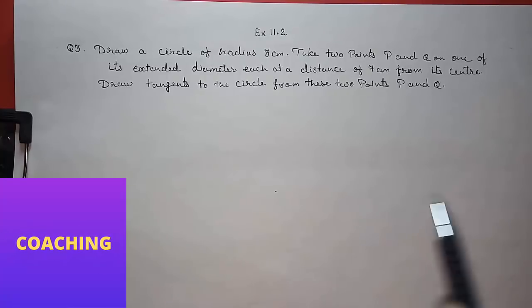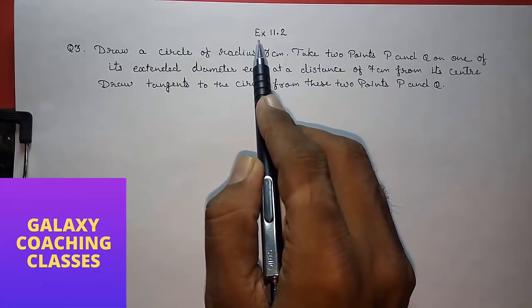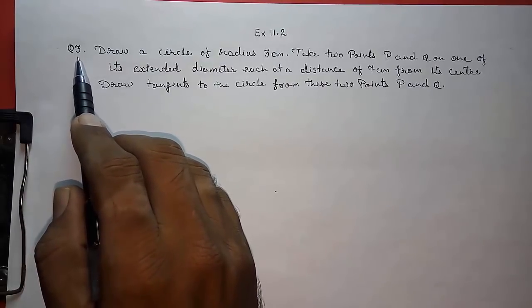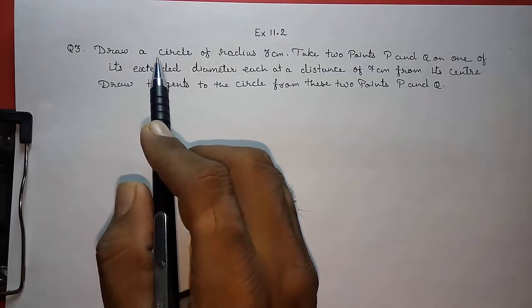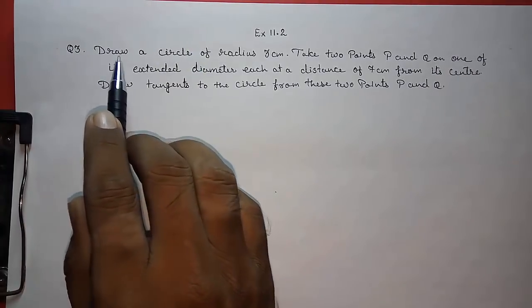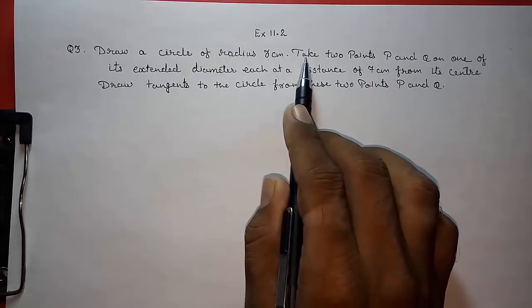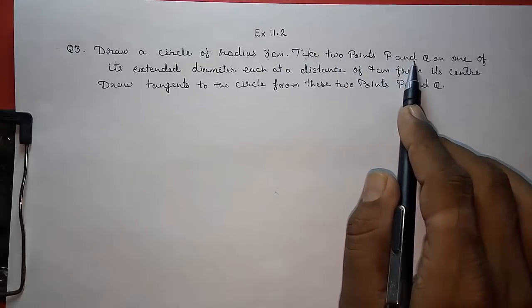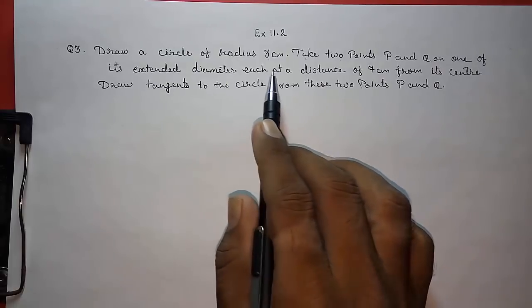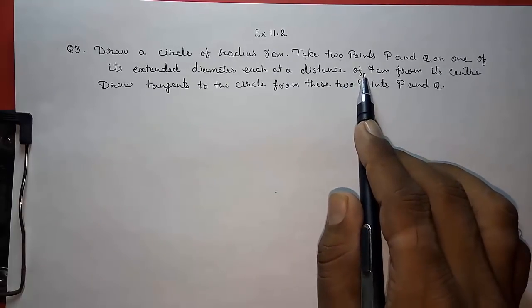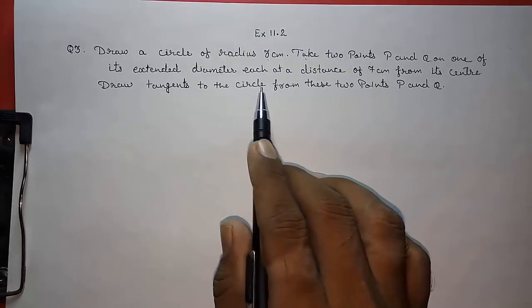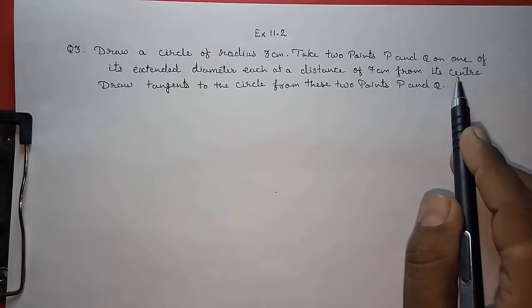Hello friends. Today we are going to study exercise 11.2 question number 3 of chapter construction class 10 CBSE. So here they say draw a circle of radius 3 centimeter. Take two points P and Q on one of its extended diameters each at a distance of 7 centimeter from its center. Draw tangent to the circle from these two points P and Q.